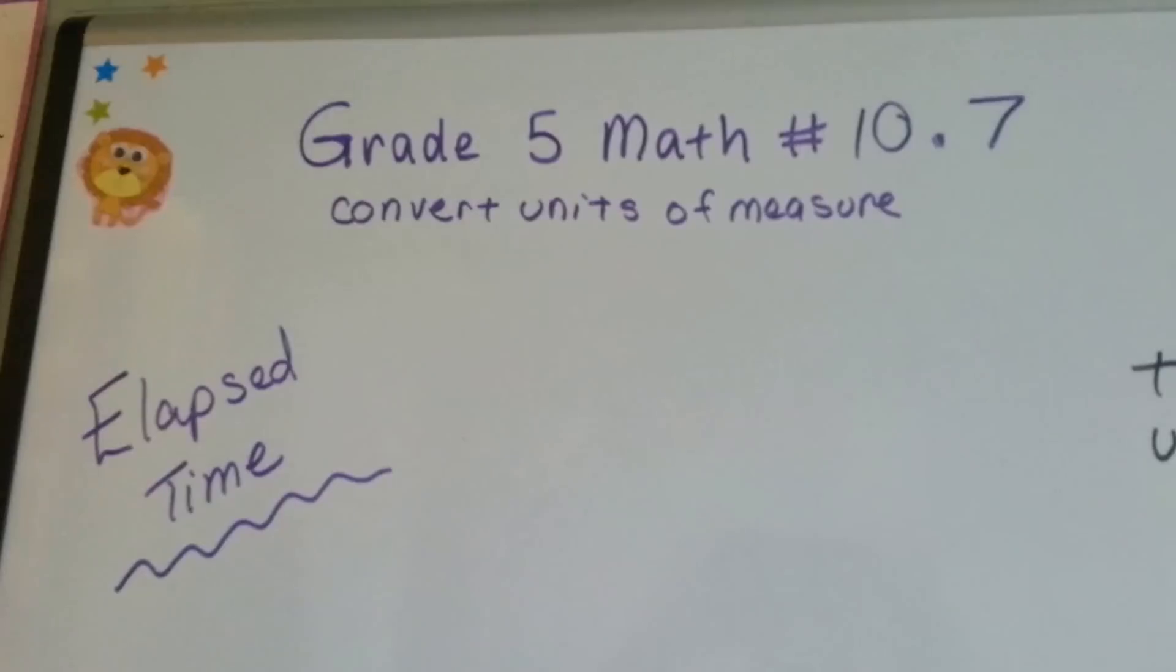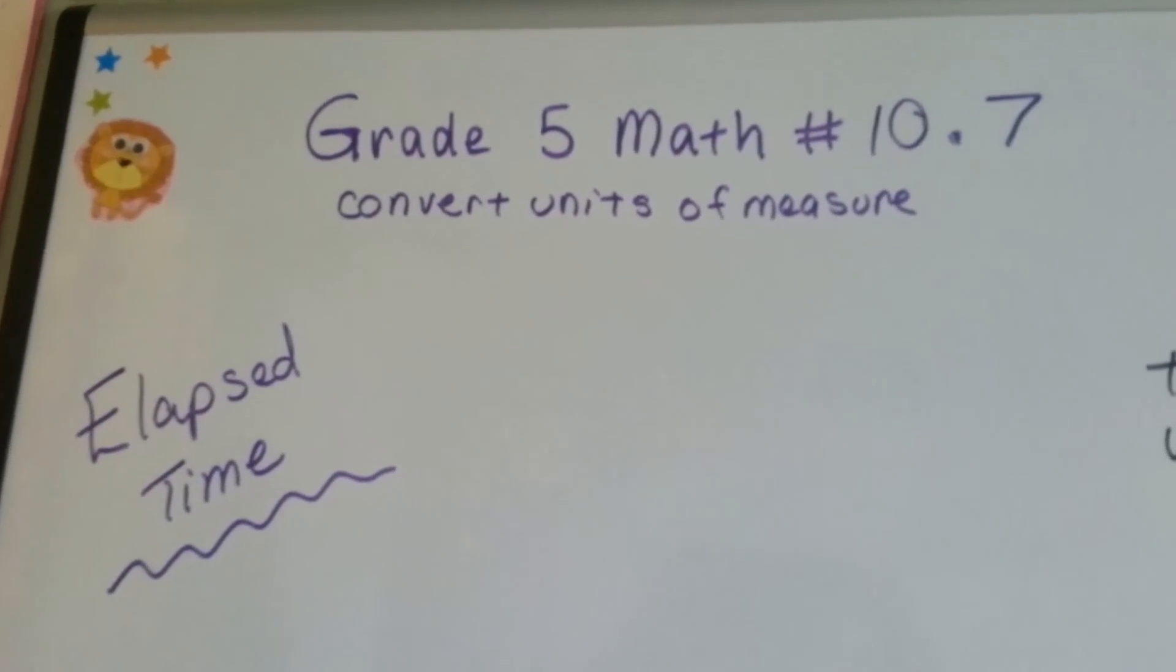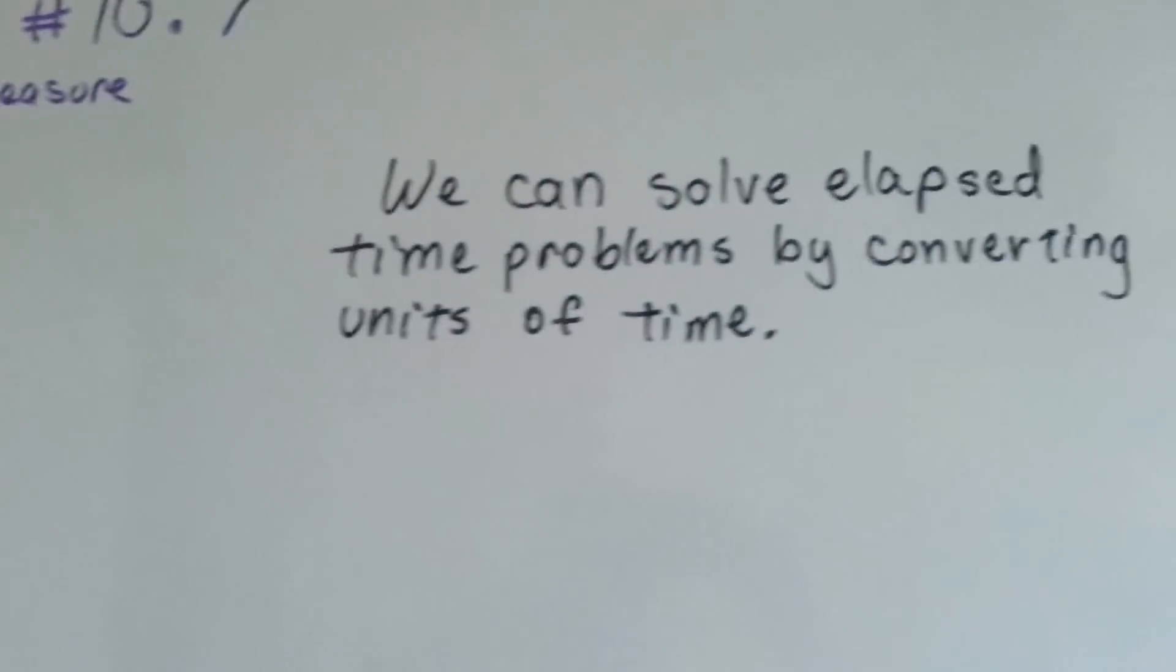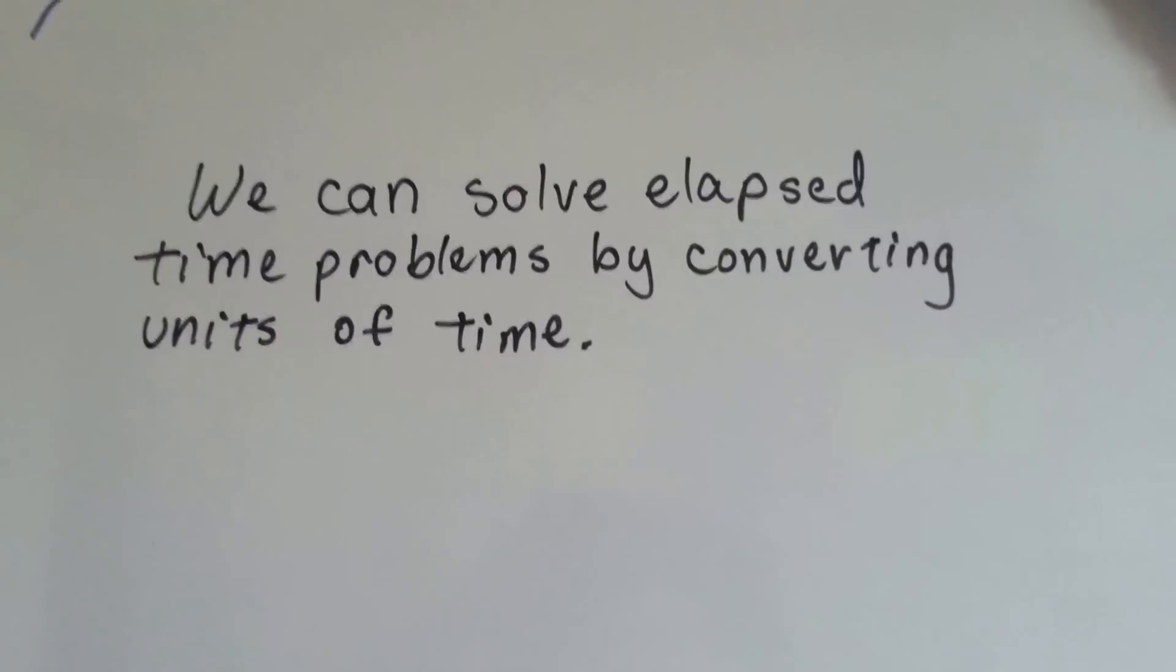Grade 5 math number 10.7, elapsed time. We can solve elapsed time problems by converting units of time.